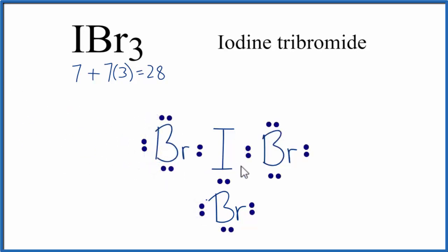At this point, we've used 24 valence electrons, and we have 4 more valence electrons left. So we can put those around the iodine, which can have an expanded octet. Iodine can have more than 8 valence electrons.